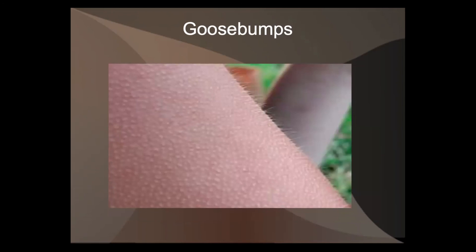With goosebumps, every hair stands up on end. You might not have visible hair and still get goosebumps because the hair follicles are still there but the hair is just below the skin surface. Those bumps are from the muscles flexing, pulling the skin and making it move upward.